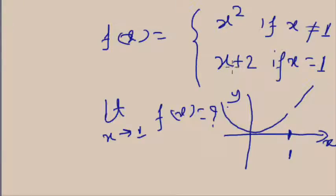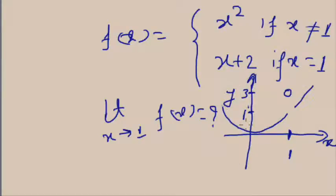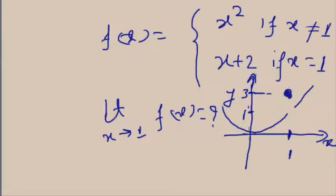For x not equal to 1, the graph follows x squared. At x = 1, the value is x + 2 = 1 + 2 = 3, so y = 3 at x = 1. In this graph you see the curve of f(x) = x squared except at x = 1, where f(1) = 3. So the graph has a hole at x = 1 on the parabola and a separate point at y = 3.